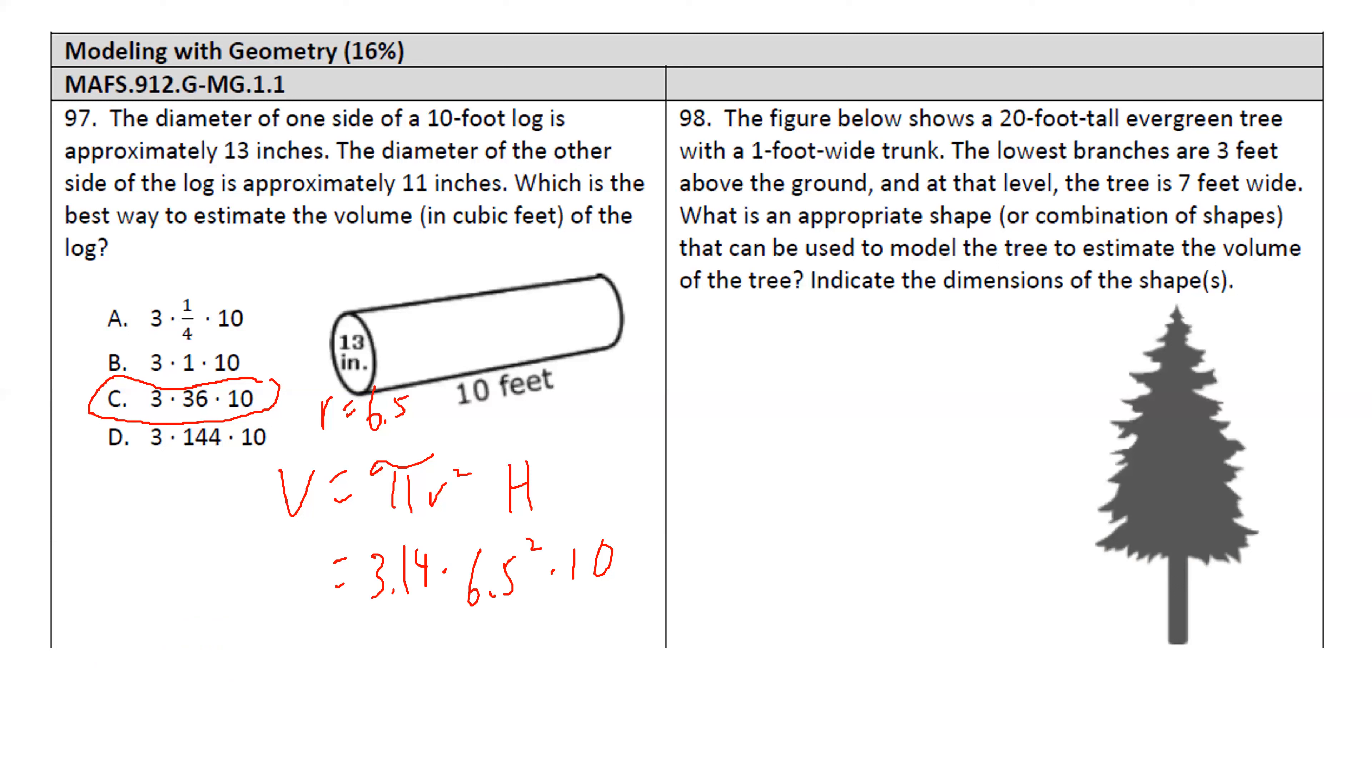On 98. This one, they gave us a lot of information. They told us the tree is 20 feet. They told us that the trunk is 1 foot wide. They told us that the lowest branches are 3 feet above the ground. They also told us that the base of the branches at the widest part is 7 feet.